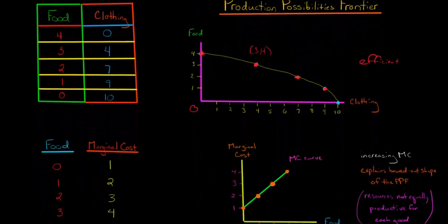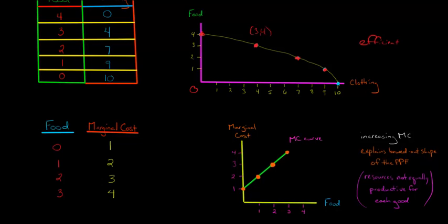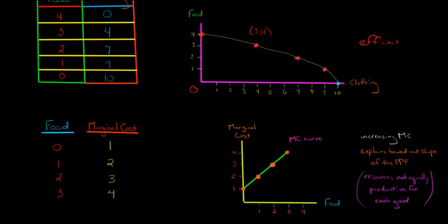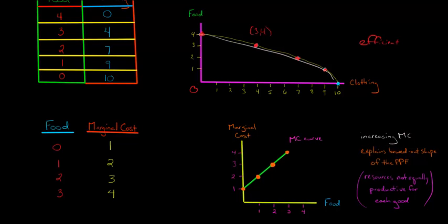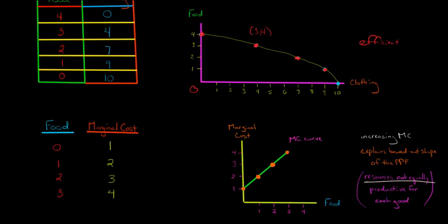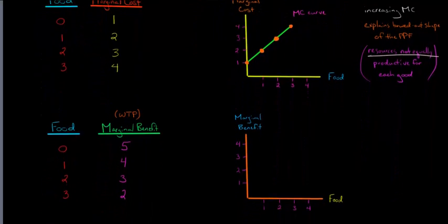In our previous video, we looked at the marginal cost from the perspective of producing food. Going from zero to one unit of food, the marginal cost would be one. Going from one to two units, the marginal cost would be two, and so forth. We have this increasing marginal cost curve, which explains why the PPF has a bowed-out shape — resources are not all equally productive for each good. Some people are better at producing clothing than food, and as everyone shifts to clothing, that last unit of clothing costs more in terms of food given up.